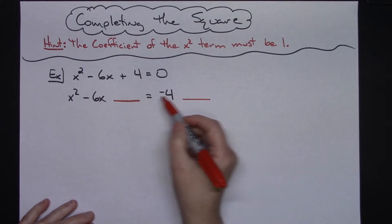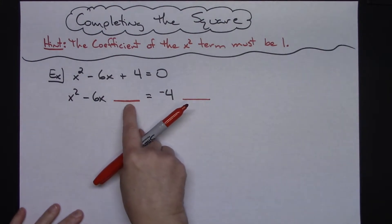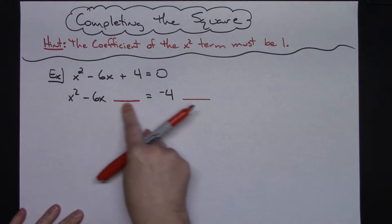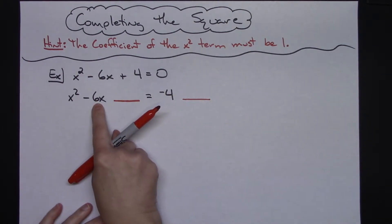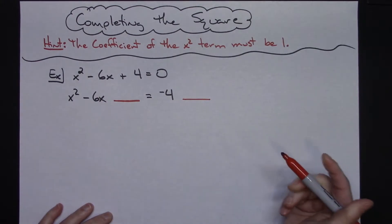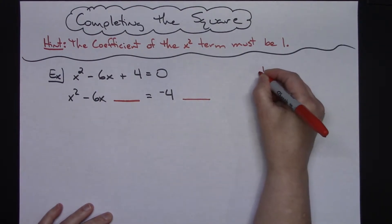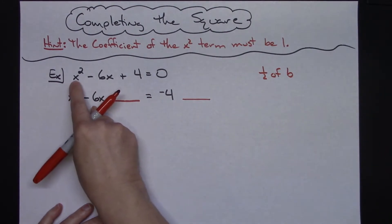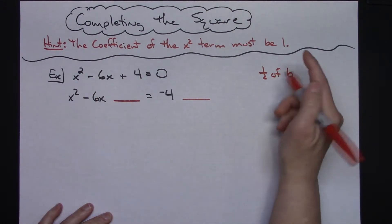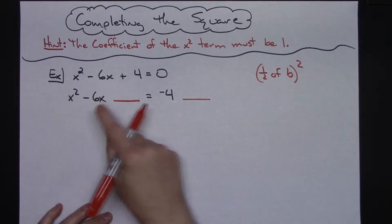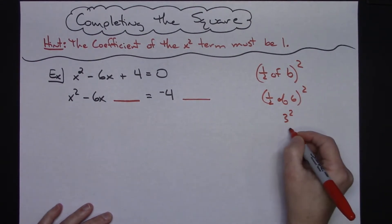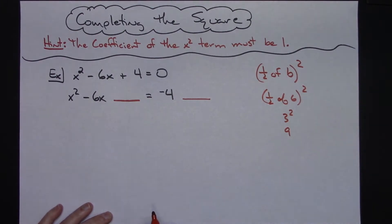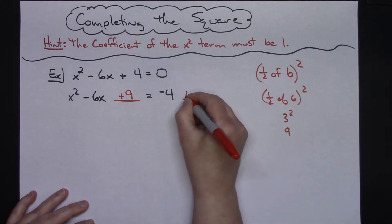So on the left-hand side I have x² minus 6x and then a blank, equals negative 4 and then a blank. This helps me remember that I need to add a number to both of those spots. To create that perfect square trinomial, we take the b coefficient, take half of it, and then square it. So in ax² + bx + c form, half of b squared. Half of 6 is 3, and 3 squared is 9. So I'm going to put plus 9 in each blank.